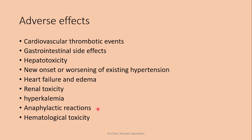Anaphylactic reactions can occur with Celecoxib, ranging from mild asthmatic attacks to life-threatening severe anaphylactic shock. Finally, hematological toxicity — specifically anemia — can occur due to blood loss from the GI tract as a result of GIT side effects, and also due to fluid retention and effects on erythropoiesis.